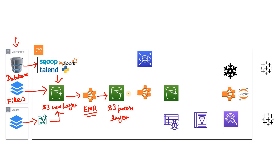From the S3 process layer, we again read data in EMR — maybe using PySpark for our batch ETL workloads. In a PySpark DataFrame we read data from different S3 paths, apply business logic such as joining, filtering, and any number of transformations, and then write the final processed data into the S3 consumption layer.